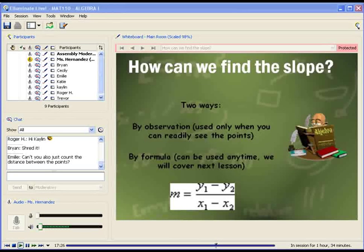Yes, Emily. You can also count the distance between the points and what we can do is put those into a fraction. We can put the difference in Y in the numerator and the difference in X in the denominator, and this is called the rise over the run, which is the slope or the slant.